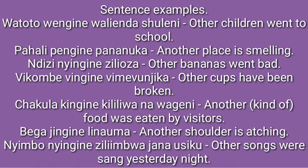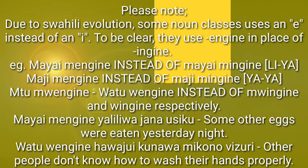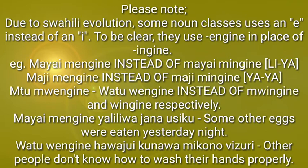As you can see, some prefixes take E instead of I — so instead of 'ingine' the form becomes 'engine.' I have indicated all of them in the prefixes part. For example, instead of 'pahali pingine' you say 'pahali pengine,' and instead of 'watu wingine' you say 'watu wengine.' Please note: due to Swahili evolution, some noun classes use an A instead of an I. To be clear, they use 'engine' in place of 'ingine.'